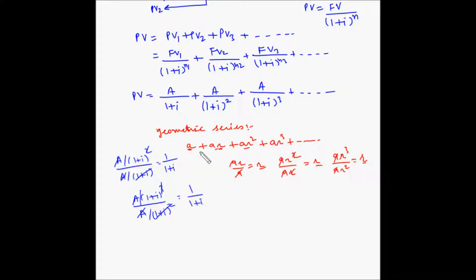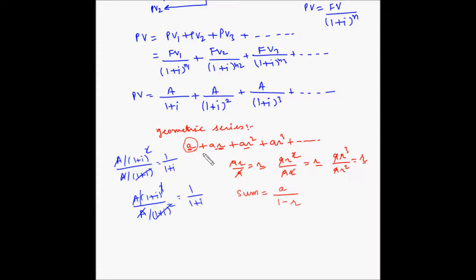For an infinite geometric series A + AR + AR² + AR³ + ..., A is the first term and R is the common ratio, and the sum equals A divided by (1 minus R). For our present value of perpetuity series, the first term is A/(1+I) and the common ratio R is 1/(1+I).